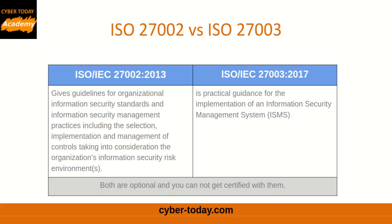Now let's compare ISO 27002 and ISO 27003. ISO 27002 gives guidelines for organizational information security standards and information security management practices, including the selection, implementation, and management of controls taking into consideration the organization's information security risk environment. While ISO 27003 is practical guidance for the implementation of an Information Security Management System, ISMS. Both standards are optional and you cannot get certified with them.